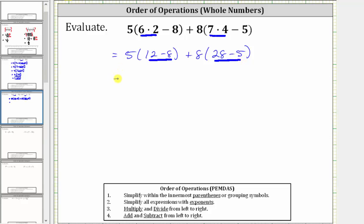Which means the expression simplifies to five times four, plus eight times 23. Notice now the expression contains multiplication, as well as addition. And once again, because we multiply and divide before we add and subtract, the next step is to determine the two products.